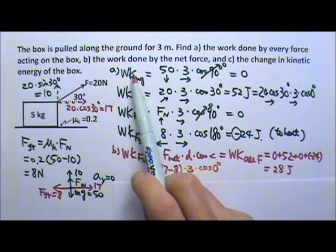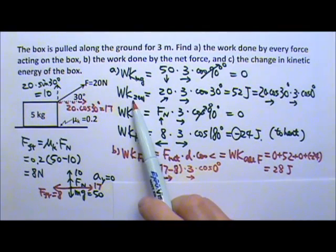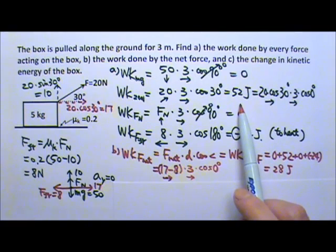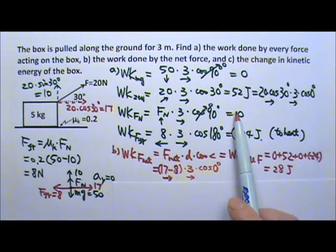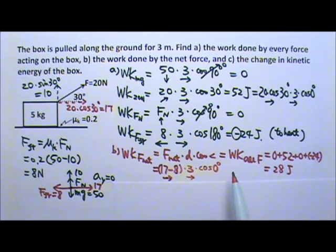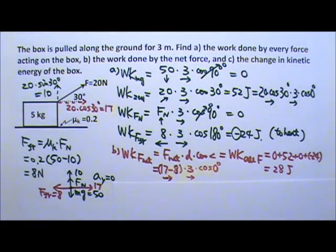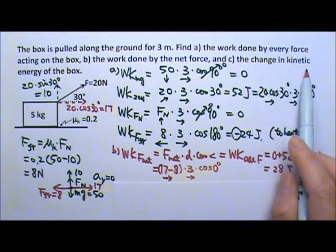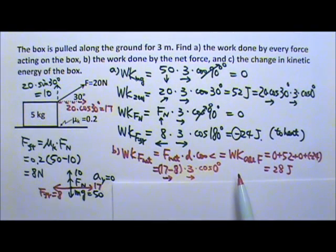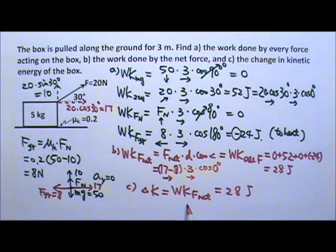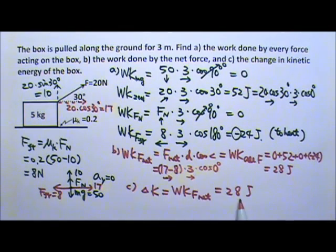In summary: Mg does no work, the slanted force gives the box 52 J of energy, the normal force does no work, and friction takes away 24 J converting it to heat. The box has a net energy gain of 28 J. For part C, by the work-energy theorem the change in kinetic energy equals the work done by the net force, so delta KE equals positive 28 J — the kinetic energy of the box increases by 28 joules.